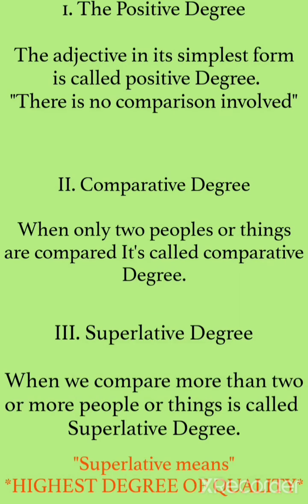The first is positive degree. The adjective in its simplest form is called positive degree. There is no comparison involved. It means that adjectives written in a simple way are called positive degree — no comparison is involved in them.